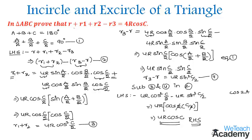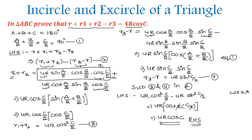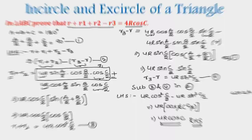We can conclude that r + r1 + r2 − r3 = 4r·cos(C). Make a note of the formulas of r1, r2, r3, and r — these are the formulas of ex-circles of a triangle, which will be used in upcoming videos. Stay tuned on our channel, We Teach Academy. Thanks for watching, have a nice day.